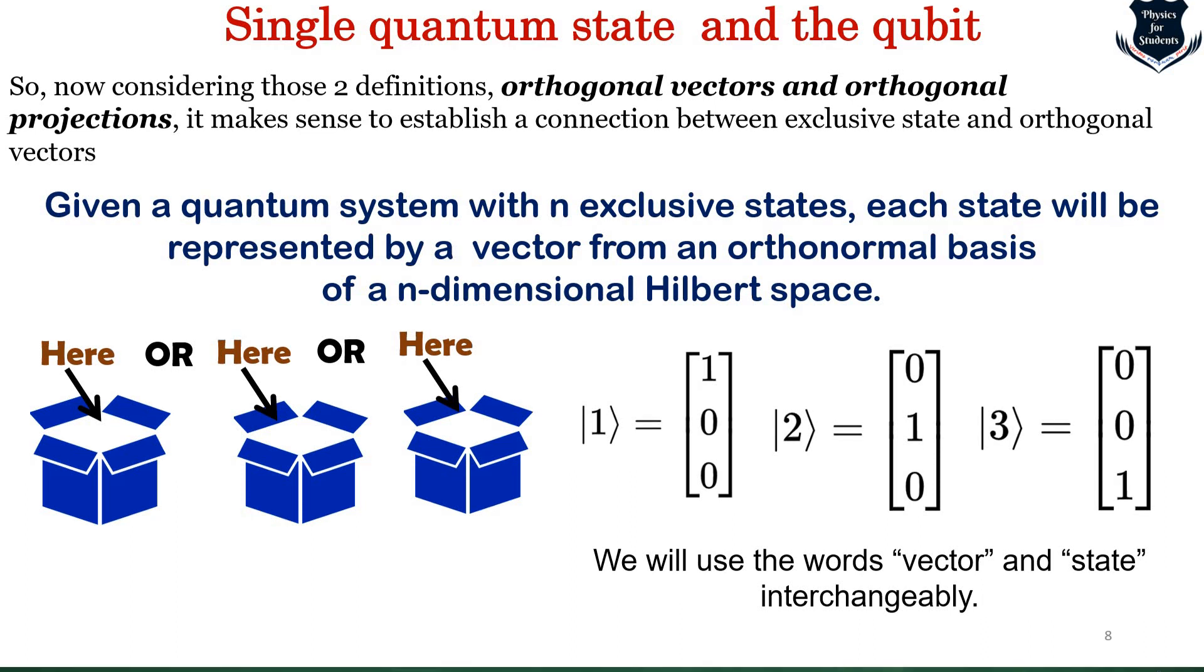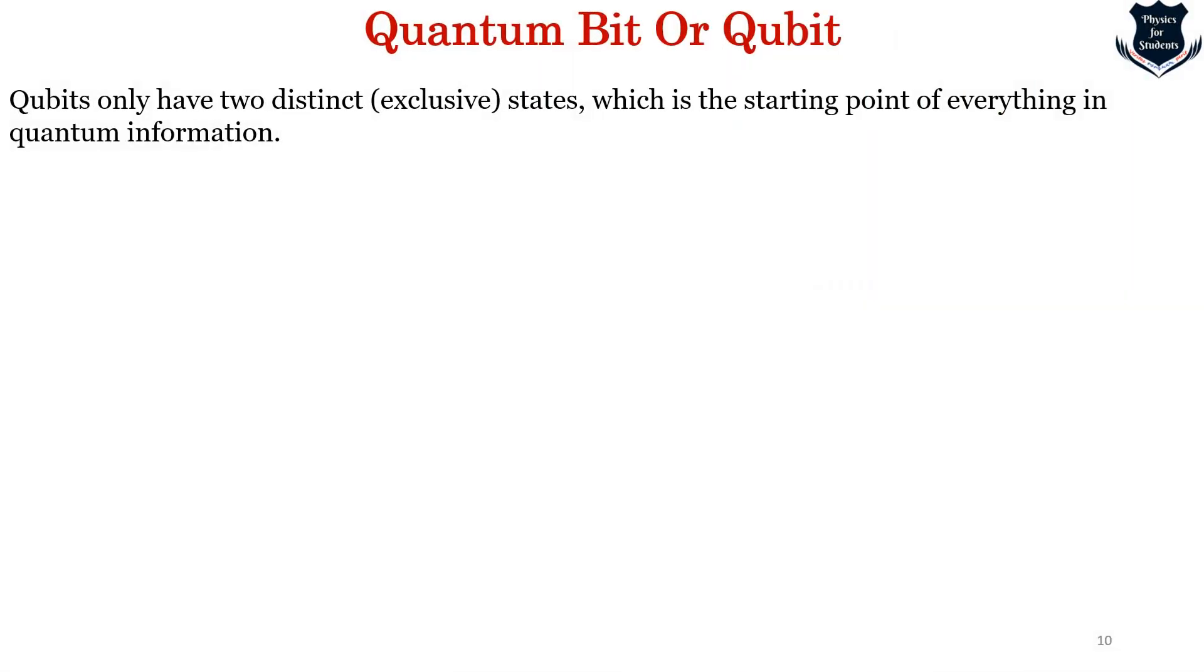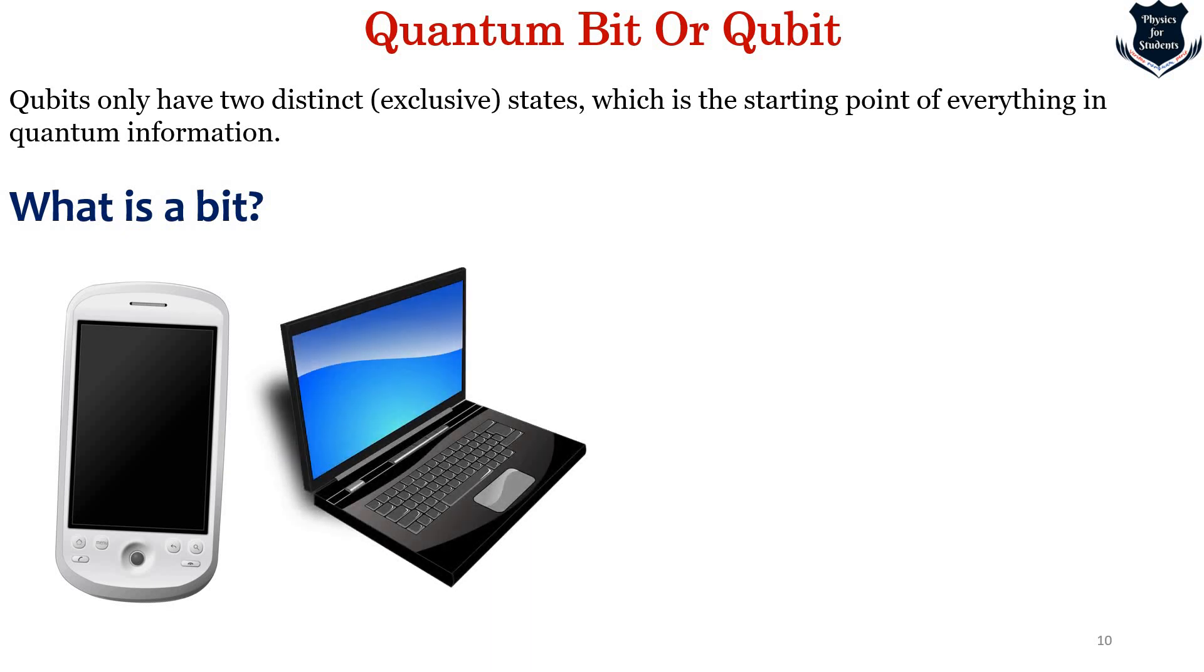Now that we have understood what is a single quantum state and how it is orthogonal, it is time that we should introduce the concept of qubit. Although it might sound a little bit abstract, I will make it very simple. Qubits actually only have two distinct or exclusive states, which is the starting point of everything which we need in quantum information. Note that all mathematical statements we will discuss can be applied to any quantum system with any number of discrete physical states. But before we introduce qubits, we would like to go back and understand the basic definition of what is a bit.